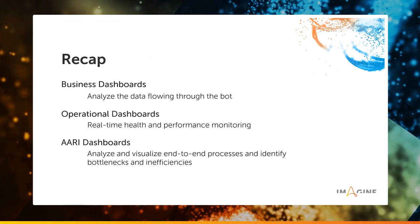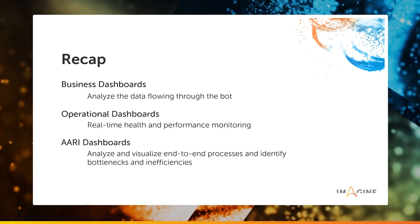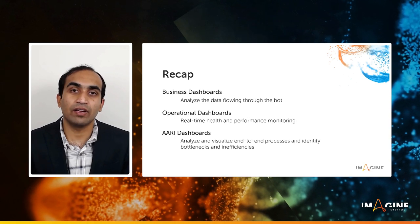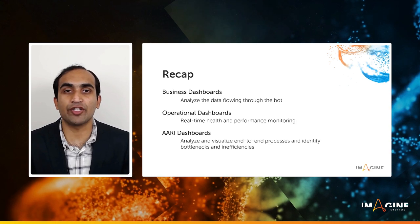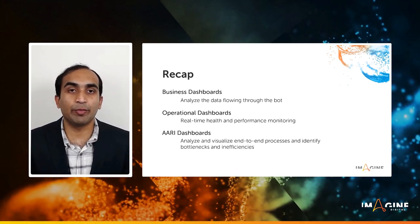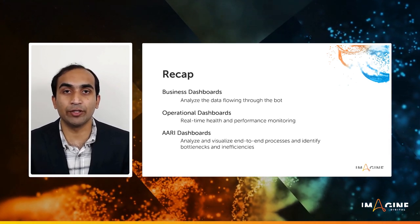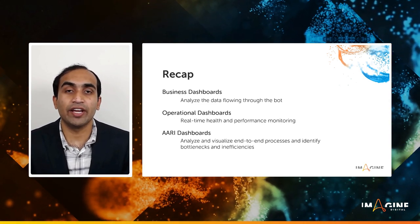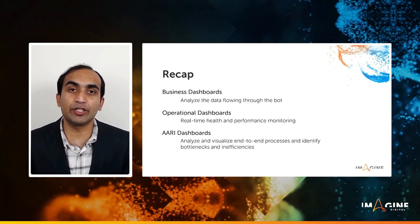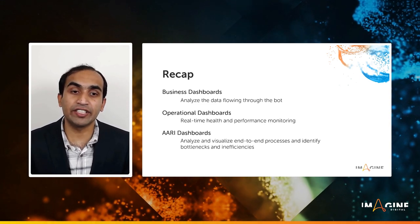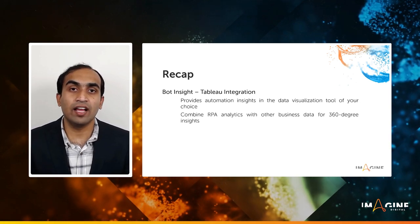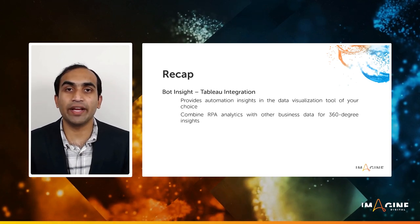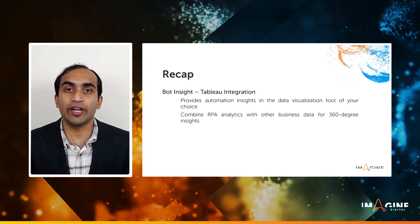To recap, it's all about taking a holistic approach to optimize your automation program using data. Business dashboards: you can see the data flowing through your bots and analyze raw data to derive trends for strategic business decisions. Operational dashboards provide real-time information about bot performance and device utilization — you can ensure automation resources are utilized efficiently. With RE dashboards, you get to analyze and visualize end-to-end processes and identify bottlenecks and inefficiencies. Insights Anywhere — that is the Bot Insight and Tableau integration — provides automation insights in the data visualization tool of your choice, combining RPA analytics with other enterprise data to derive 360-degree insights.